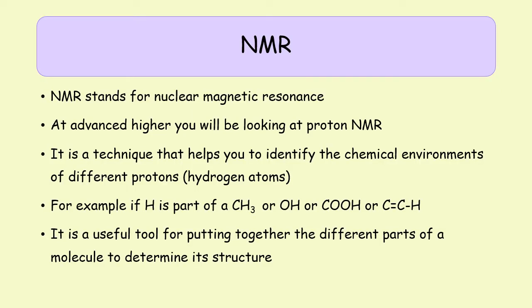This is another Advanced Higher Chemistry video completing our set of videos on experimental determination of structure with a technique known as nuclear magnetic resonance, or NMR. NMR stands for nuclear magnetic resonance and it can be done for many different elements, but at Advanced Higher you're going to specifically be looking at proton NMR — looking at NMR only for hydrogen atoms. It allows you to identify the specific chemical environments of different protons: whether a hydrogen is part of a methyl group, a hydroxyl group, a carboxyl group, or whether it's attached to a double bond.